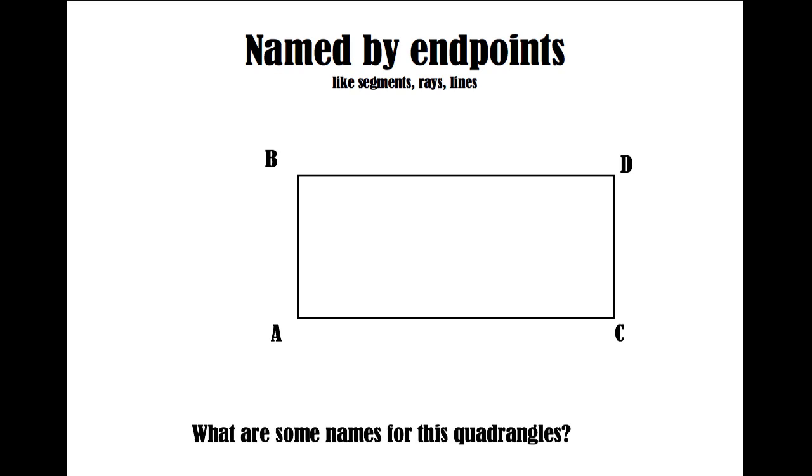Can you think of any other names for this quadrangle? Quadrangles are named according to their endpoints. However, they can be described according to their attributes. Here, we have a shape that has four right angles, two sets of parallel sides, and two pairs of sides of equal length, called a rectangle.